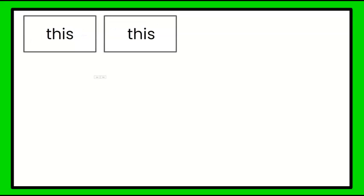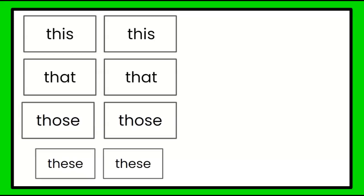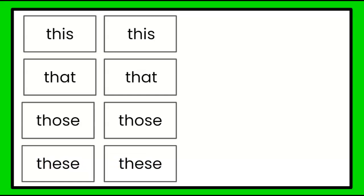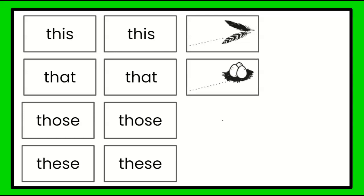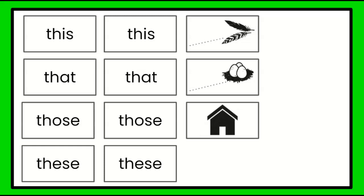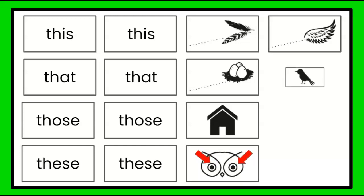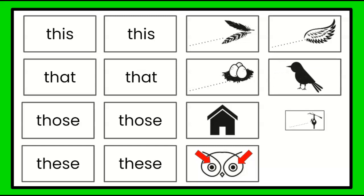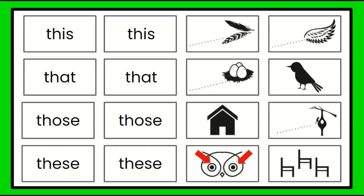Let's play a game. I'm going to show you some determiners: this, that, those, these. Now I'm going to introduce to you the noun picture cards. The dotted lines are showing us that it's far away. The cards include: feathers, eggs, house, eyes, wing, bird, bird feeder, and chairs. You ready to play? Let's do it. I'm going to turn over a noun picture card, and then you have to figure out which determiner matches.